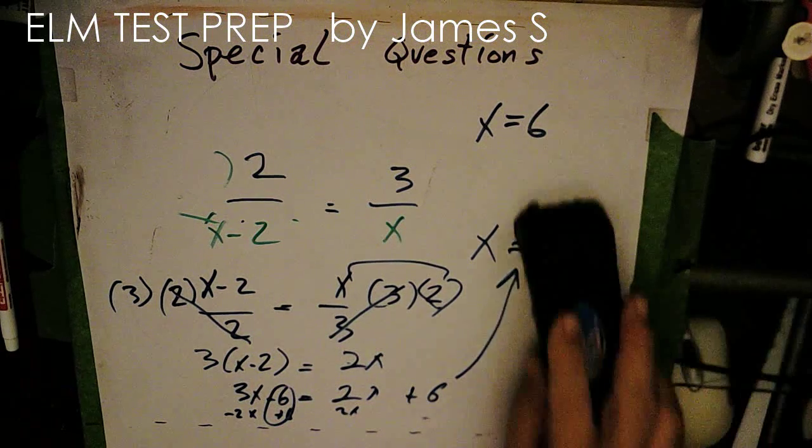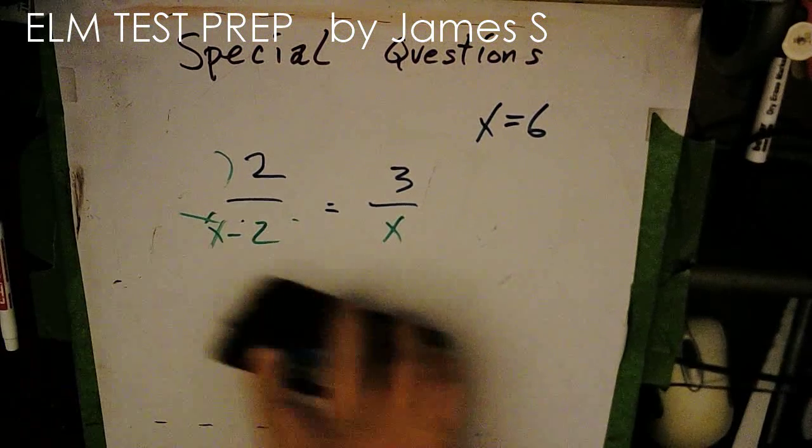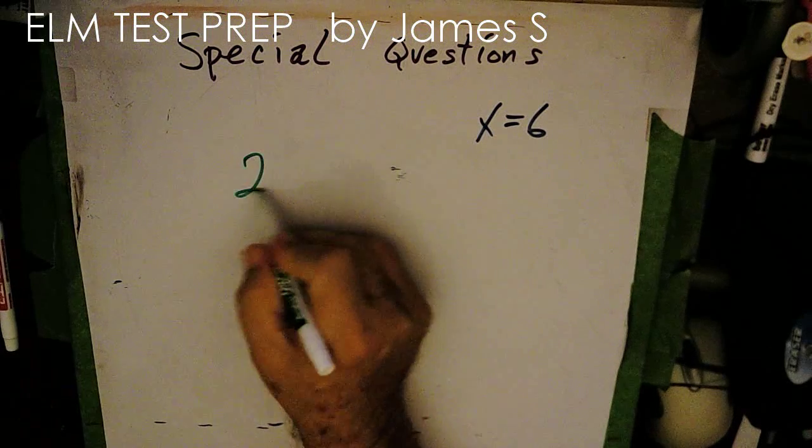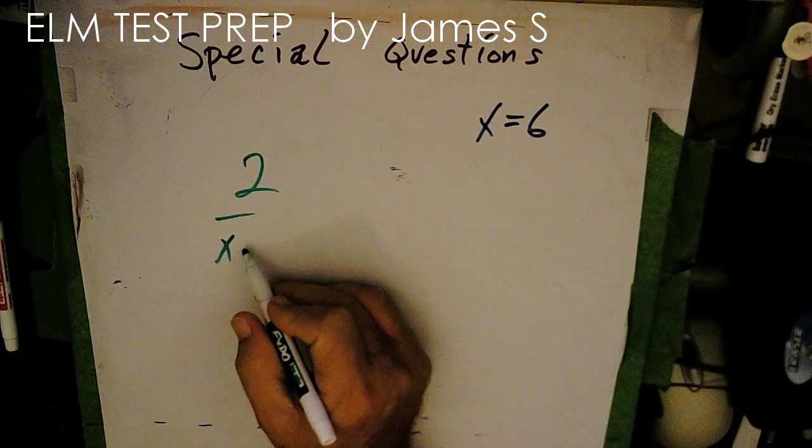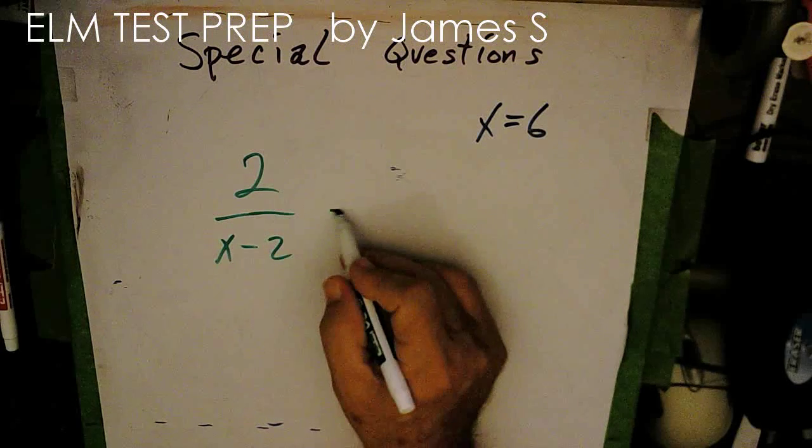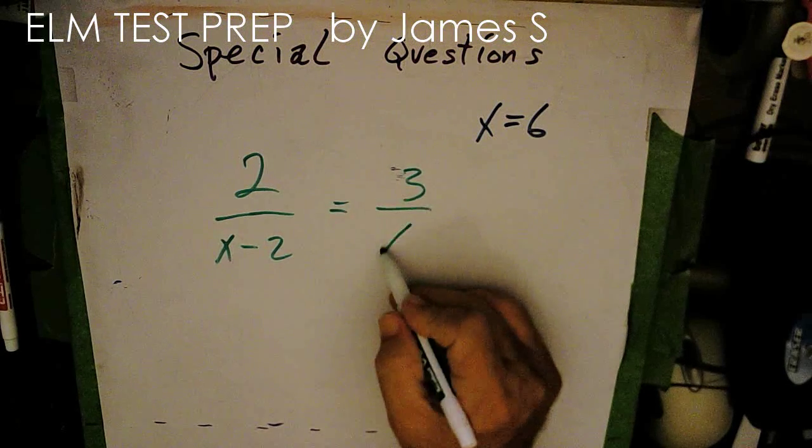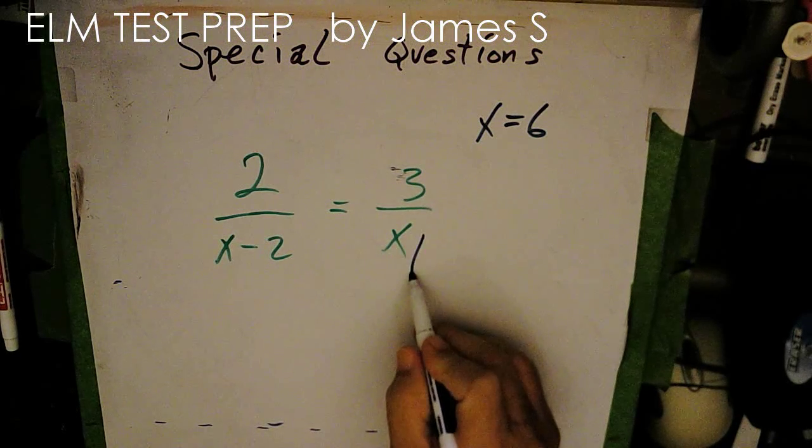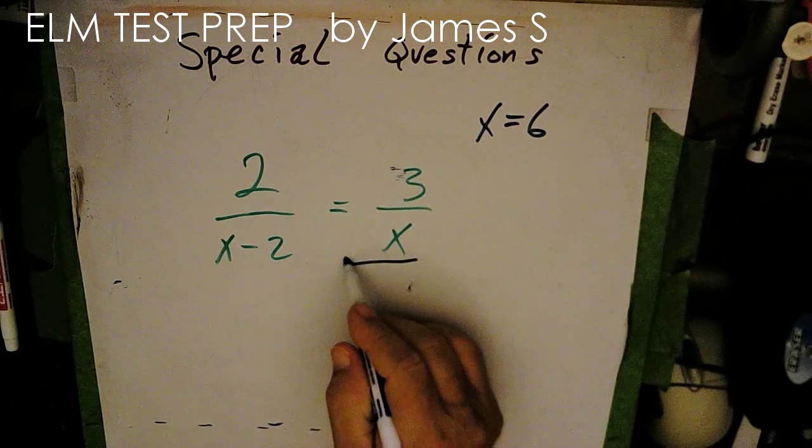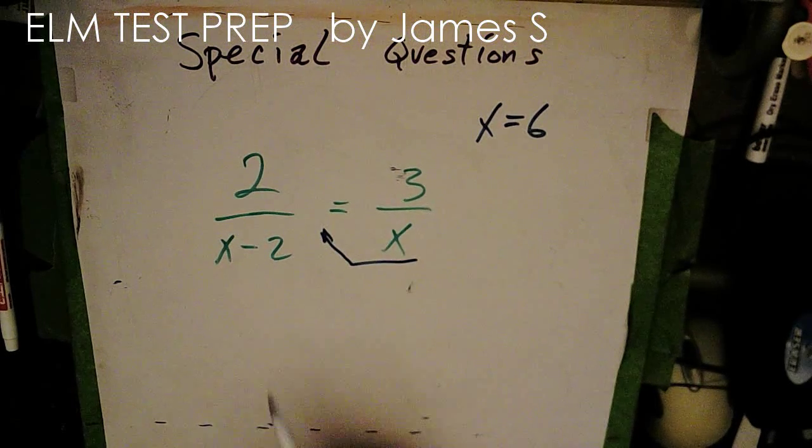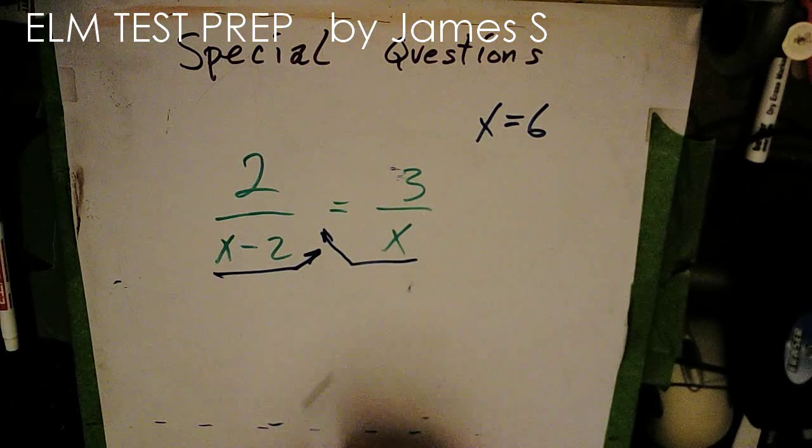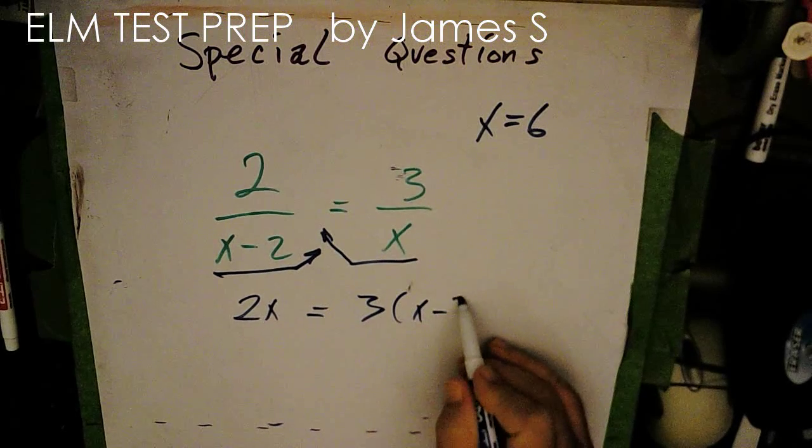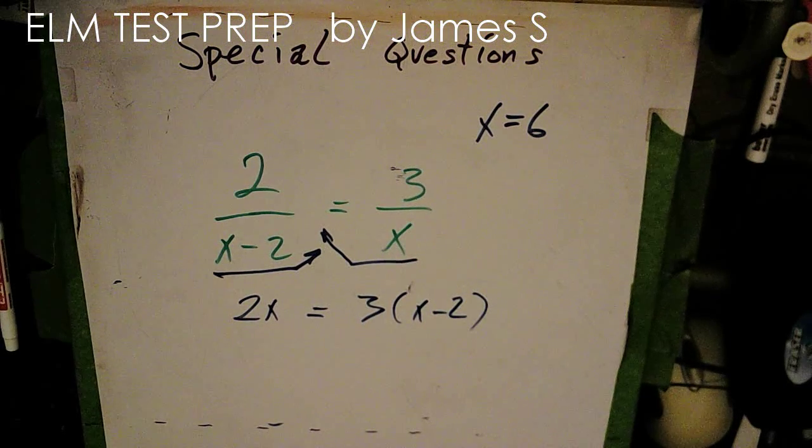Now, of course, another alternate way of looking at this. And we talked about this in one of the other videos. I'm just going to rewrite this a little bit. 2 over x minus 2 equals 3 over x. Well, in one of the other videos, I said, well, we could just take this denominator, cross-multiply it up there. Take this denominator and cross-multiply it to the other side.